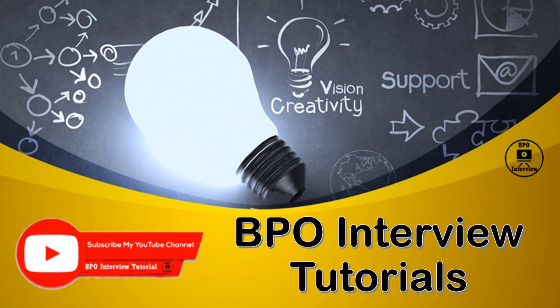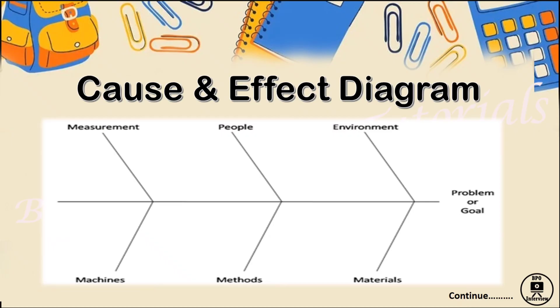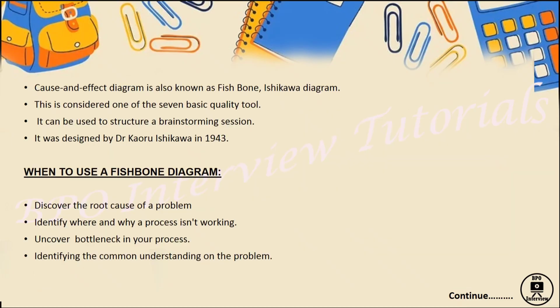The fishbone diagram, as you can see, is one of the seven quality tools. This quality tool will help you make your performance better and get an exact evaluation of the process, so we can do process improvement. It is also known as a brainstorming session.